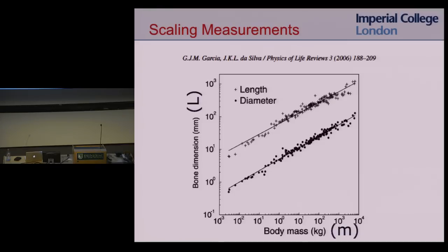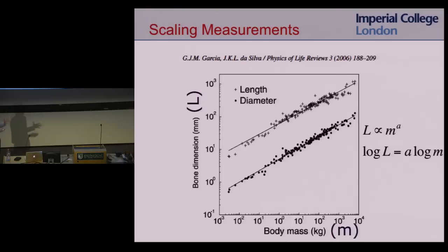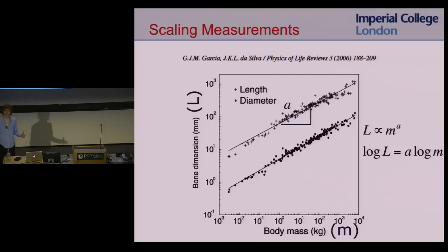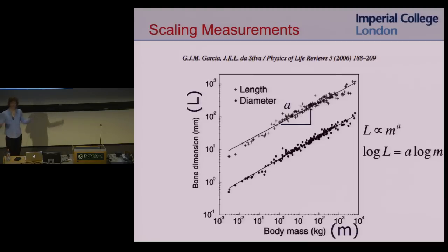The length is proportional to mass to some exponent A, and that exponent is a scaling exponent. We plot on a log-log plot because it's easy to find the exponent as the slope of the line — done historically because 50 years ago computers couldn't calculate this exponent. In traditional scaling studies, what they measure is the length of the bone and the diameter at the mid-shaft.